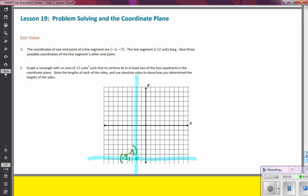So let's start with our vertical line. If we begin at our point negative two, negative seven, and I want my line segment to be 12 units long, I can go up 12 units. So starting at this point, I'm going to go up 1, 2, 3, 4, 5, 6, 7, 8, 9, 10, 11, and 12.